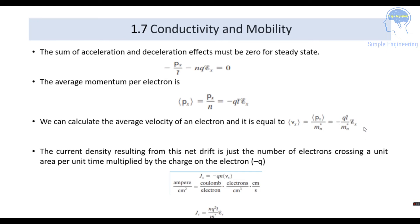Substituting the average velocity v_x into the current density equation J_x = −qnv_x, and substituting v_x = −qτ̄E_x/m_n*, the two negatives cancel, giving: J_x = nq²τ̄E_x/m_n*.